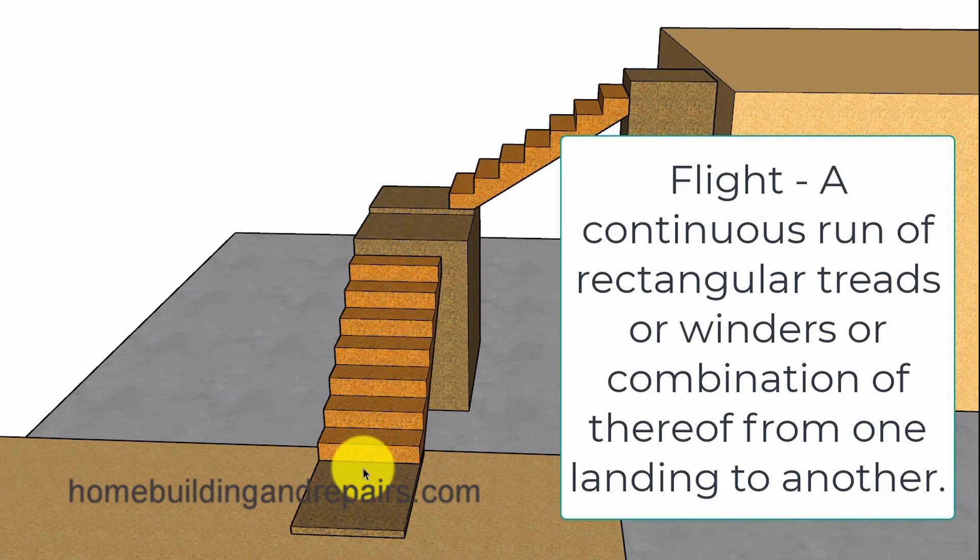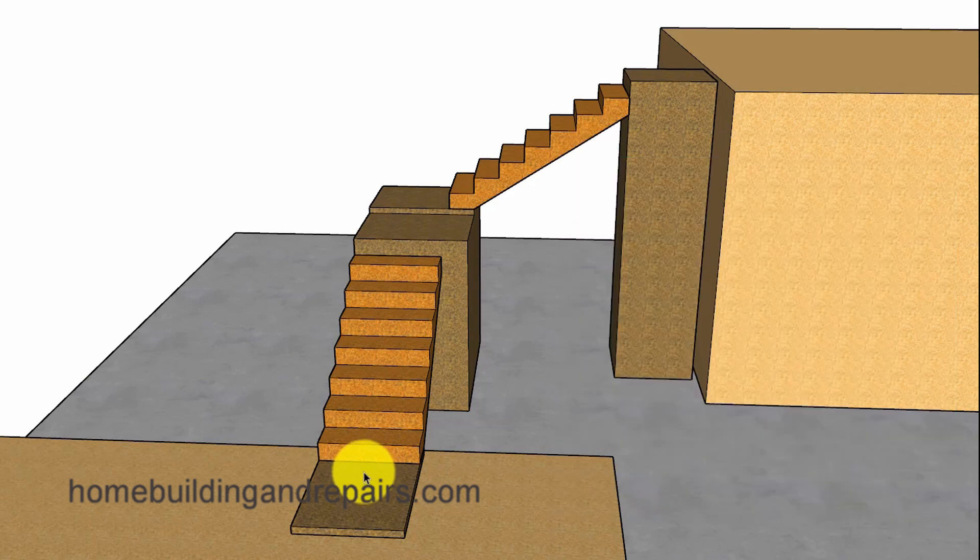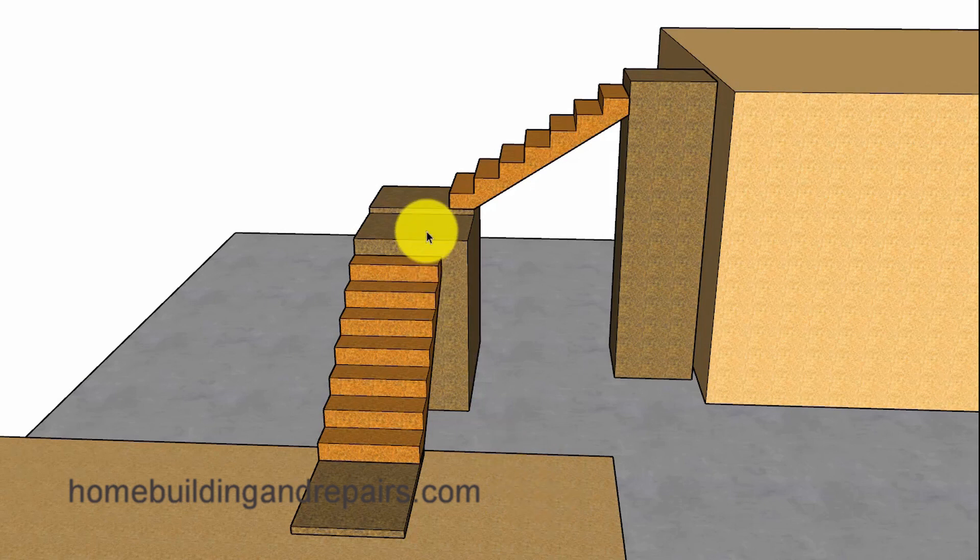Meaning that a flight of stairs will be from one landing or one level, one floor, to the next landing, suggesting that the flight of stairs would be right here. All risers and treads would need to be the same from this landing to this landing and from this landing to this landing.